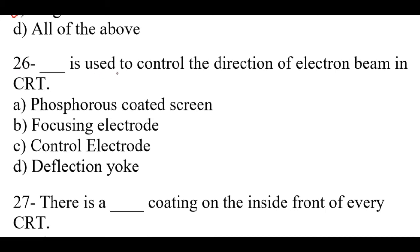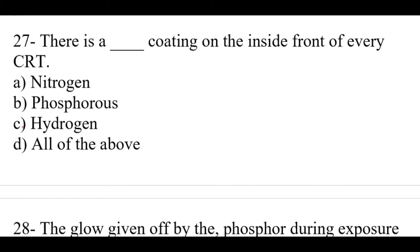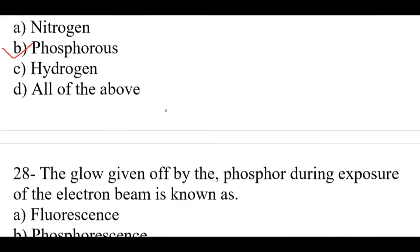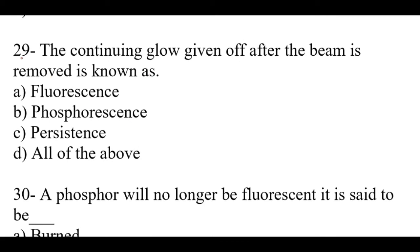Question number 26: Dash is used to control the direction of electron beam in CRT. Right option is D, deflection yoke. Question number 27: There is a dash coating on the inside front of every CRT. Right option is B, phosphorus. Question number 28: The glow given off by the phosphor during exposure to the electron beam. Right option is A, fluorescence.